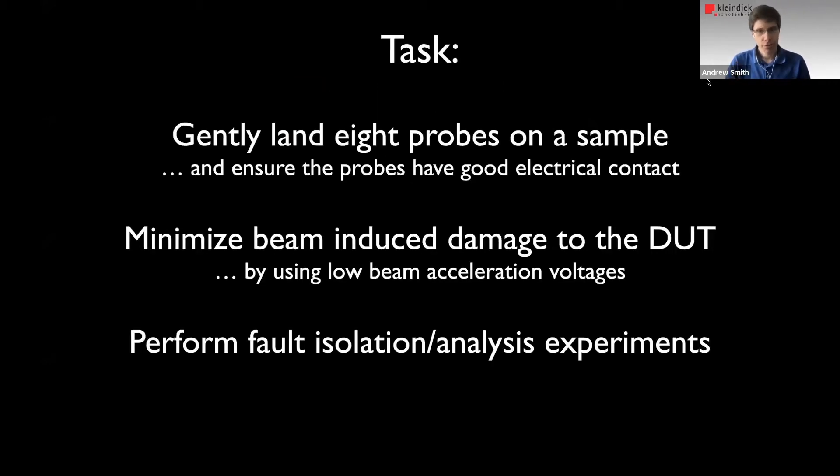As we've seen in the previous talks, the task is to get probes onto the surface and to get good electrical contact, which is not trivial in some cases. At the same time, we need to minimize beam-induced damage, because as we saw, the electron beam can cause the devices to be changed or damaged. So we can't see what we're trying to see. And once the probes are on the surface, we want to be able to perform our fault analysis and isolation experiments.